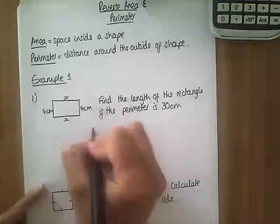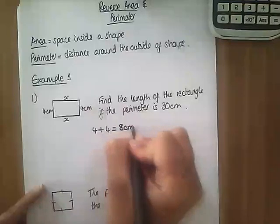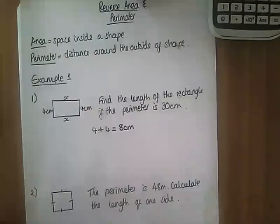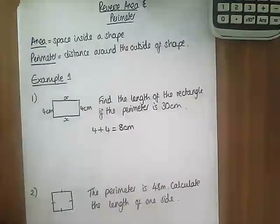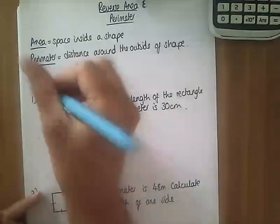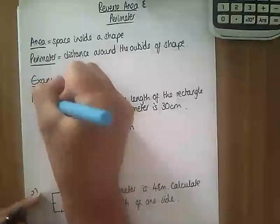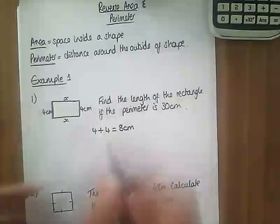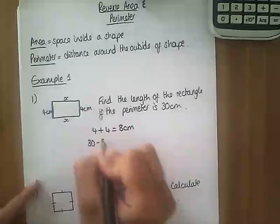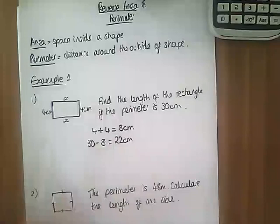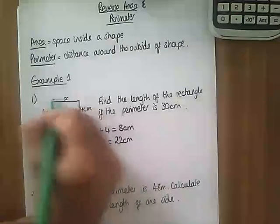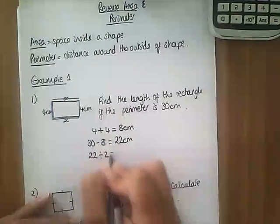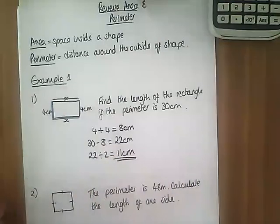If we add our 4 and our 4 that gives us 8, so we know that bit has a total of 8 which means our remaining bits must make up the rest to make it up to 30. We're going to do 30 take away 8 which leaves us with 22, so these green bits must be a total of 22. To get what one of them is I divide by 2 to make 11 centimeters.